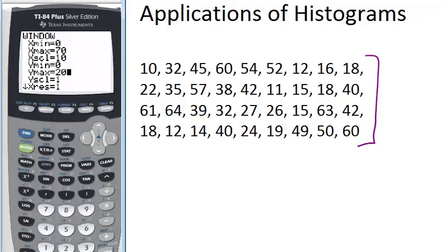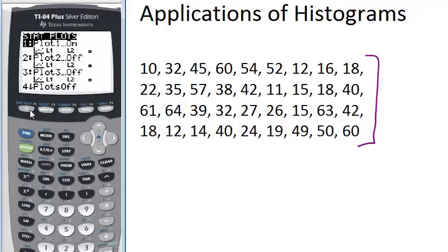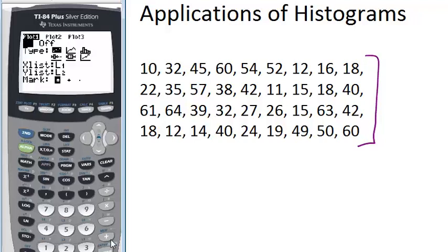Once you've set up your window, you need to tell the calculator that you want to do a histogram. So you're going to go into stat plot and make sure you have plot 1 on. But this time we're going to make a histogram. So we go down to the type and scroll over until our histogram is highlighted and select enter.